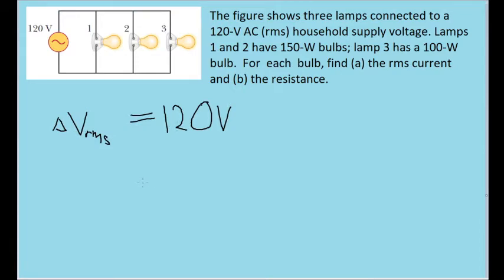To find the RMS current in each lamp, we'll first have to use the power, or the formula for electrical power, which is of course that the power is equal to the current times the potential difference. Divide both sides of this by ΔV to solve for I, and we end up with this formula here, where we take the power for each lamp and divide it by the potential difference given for all the lamps.